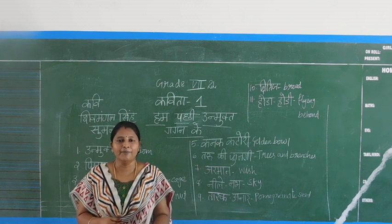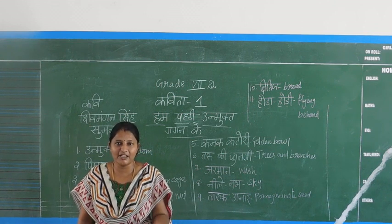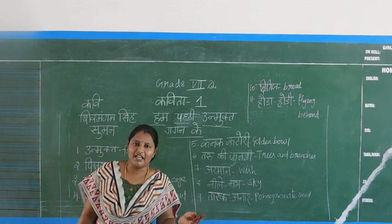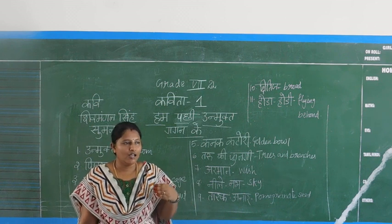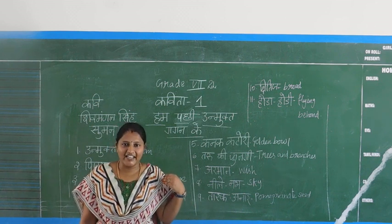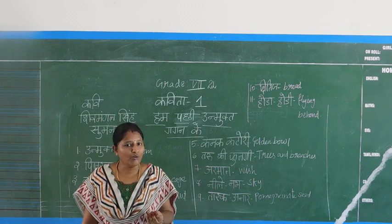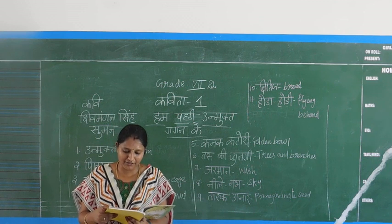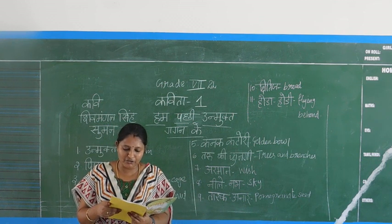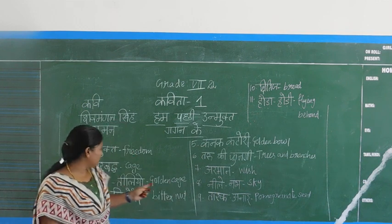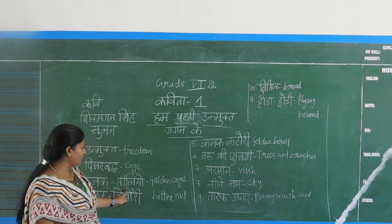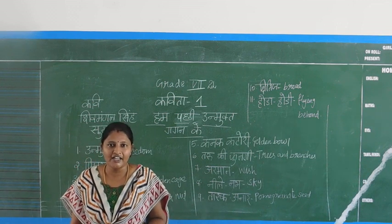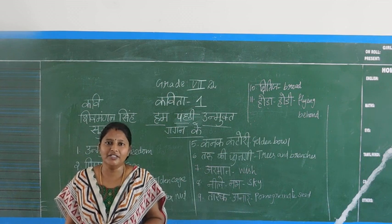In the first two lines, the birds are saying: if you are keeping us inside the cage, how will we fly freely — swatantrata se kaise udein? 'Kanak tibiliyo se dagra kar, pulki punk toot jaate hain.' Kanak tibiliyo means golden cage. Even if you give us a golden cage, we are not able to live inside it.